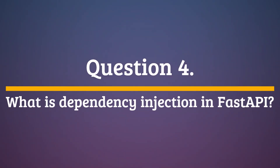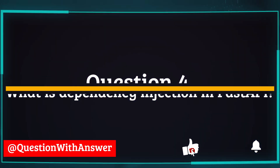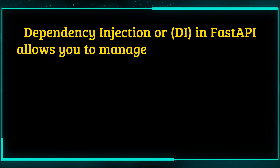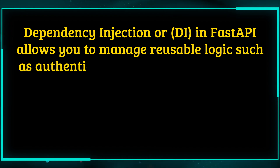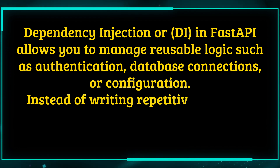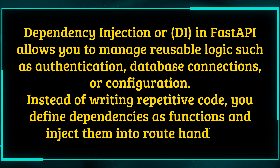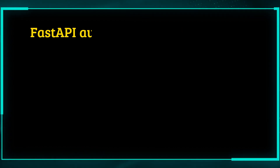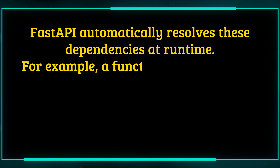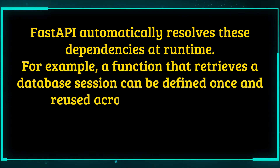Question 4: What is dependency injection in FastAPI? Dependency injection, or DI, in FastAPI allows you to manage reusable logic such as authentication, database connections, or configuration. Instead of writing repetitive code, you define dependencies as functions and inject them into route handlers. FastAPI automatically resolves these dependencies at runtime. For example, a function that retrieves a database session can be defined once and reused across multiple routes.